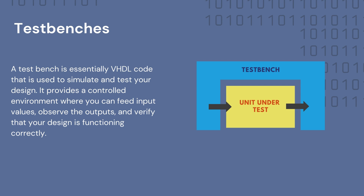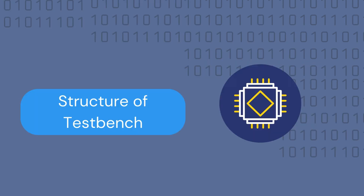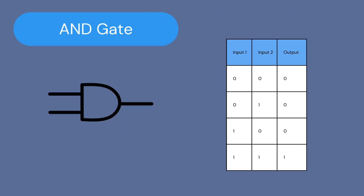As you can see from the image, we will be subjecting some stimulus with the help of this test bench to the inputs of the design, or unit under test, and then we will check the outputs. We're trying to write a test bench code that tests the design of an AND gate that we designed in our previous video.